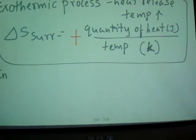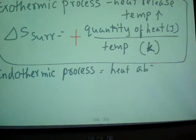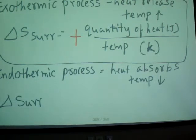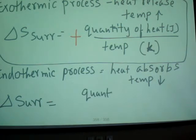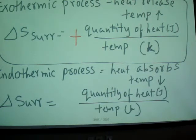For an endothermic process, heat is absorbed, so the temperature of the surrounding decreases. Writing ΔS_surrounding again as quantity of heat divided by temperature in Kelvin, in this case the sign is negative.